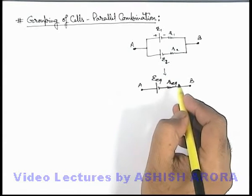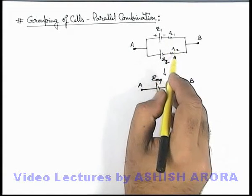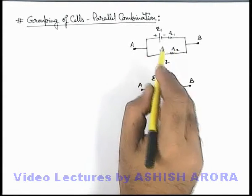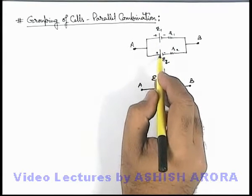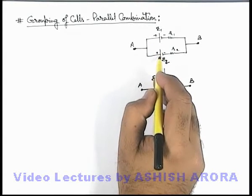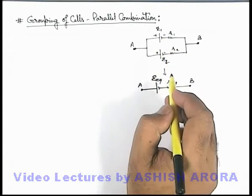And this r_equivalent we can directly consider the parallel combination of resistances r1 and r2, because here e1 and e2 are ideal batteries which are having zero internal resistance. As far as ideal battery is concerned, so across terminals A and B only r1 and r2 are connected in parallel combination.